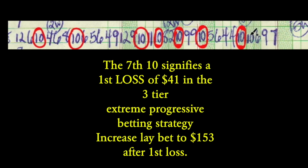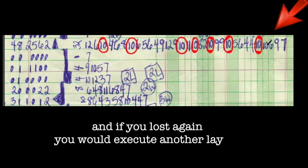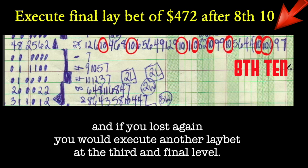Increase the lay bet to $153 after the first loss. And if you lost again, you would execute another lay bet at the third and final level.